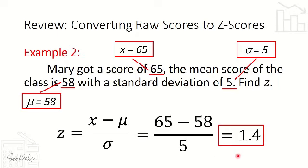This is the required knowledge before we go on with the application of normal distribution. We need to know how to convert a raw score into a z-score first, so that once converted, we can find the area under the normal curve.